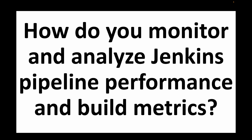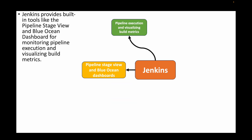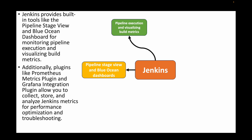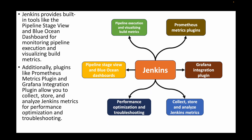The final question is: how do you monitor and analyze Jenkins pipeline performance and build metrics? Jenkins provides built-in tools like Pipeline Stage View and Blue Ocean dashboards to monitor pipeline execution and visualize build metrics. Additionally, plugins like Prometheus metrics and Grafana integration plugins allow collecting, storing, and analyzing Jenkins metrics for performance optimization and troubleshooting.